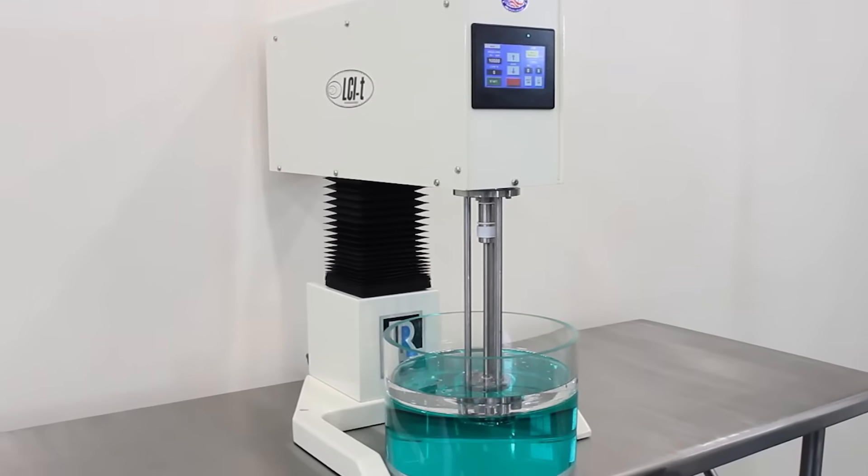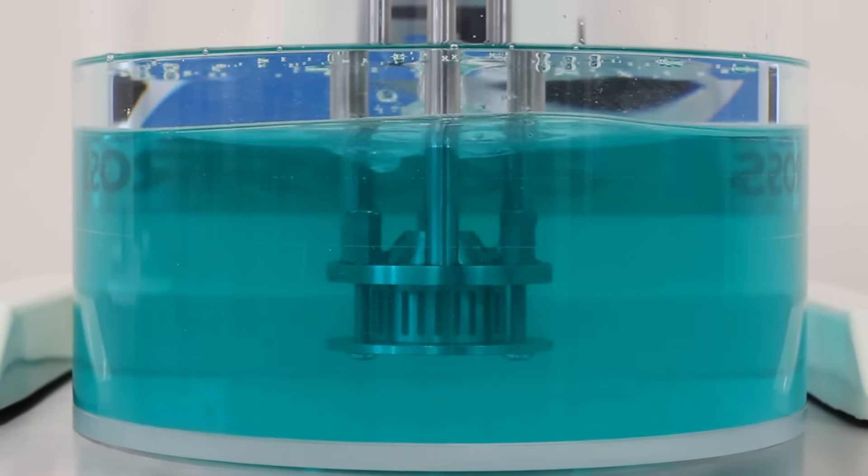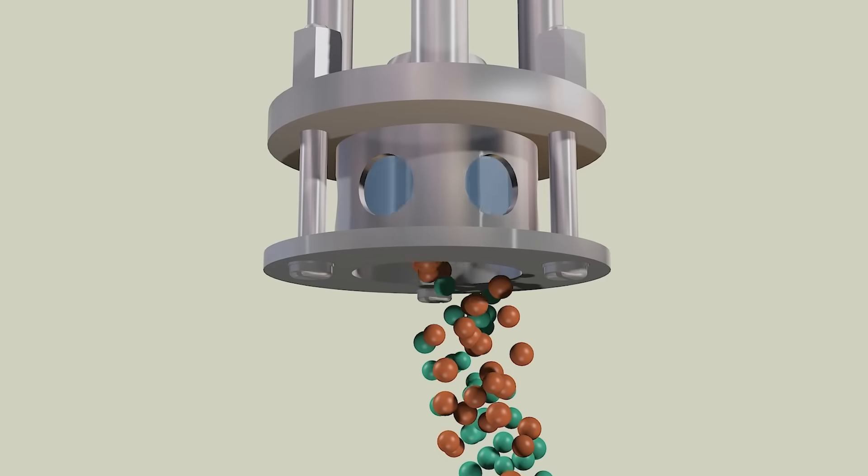The High Sheer Mixing Assembly utilizes a high-speed rotor turning within precision tolerances of a fixed stator, creating a mechanism of unprecedented mechanical shearing and milling.